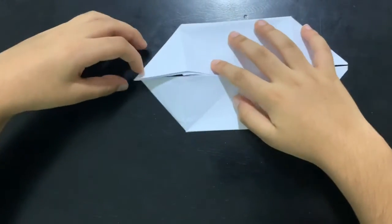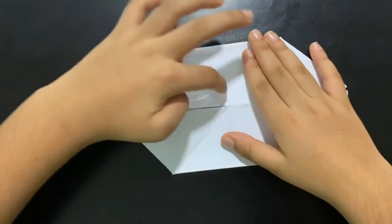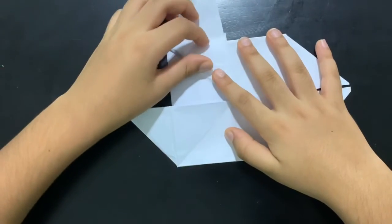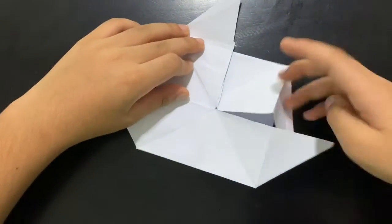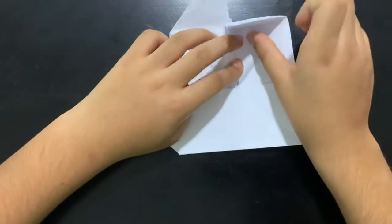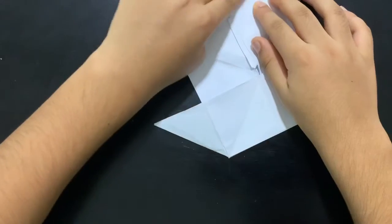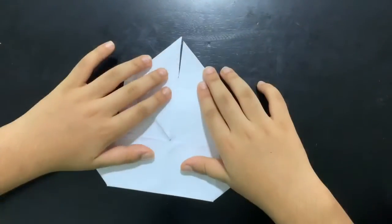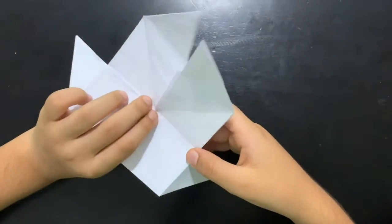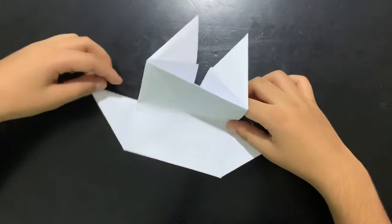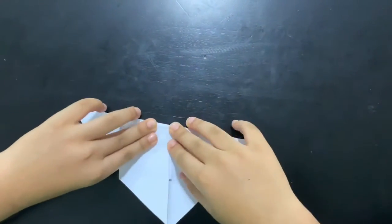This crease has to meet this crease, like this. Same on this side. Then fold it backwards. If you don't know how to fold it backwards, turn it over and fold it to here. Like this.